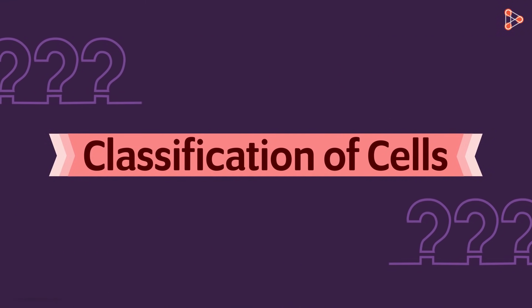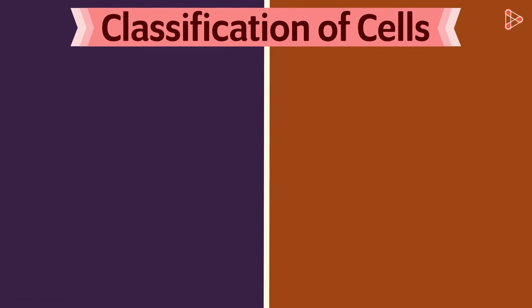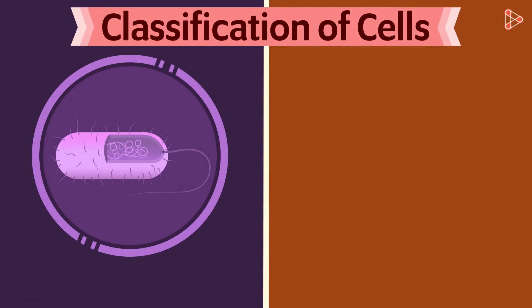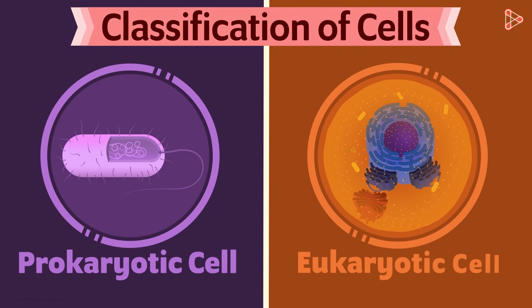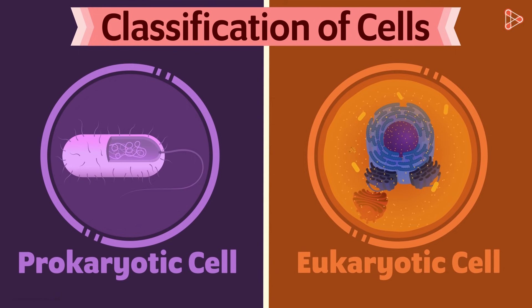Cells are broadly classified into two major types: prokaryotic cells and eukaryotic cells. Here are the two types we are referring to. This is a typical prokaryotic cell, and this is a eukaryotic cell. Let's begin understanding the difference between the two.